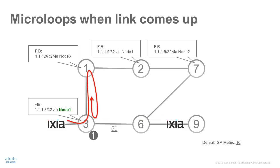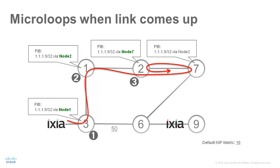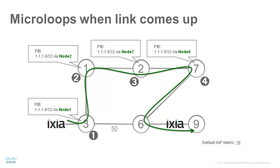Node 3 converges first, which results in a microloop between node 3 and node 1. Then node 1 converges, resulting in a microloop between node 1 and node 2. Then node 2 converges, with a microloop between node 2 and node 7. And then finally node 7 converges and the microloop is resolved.